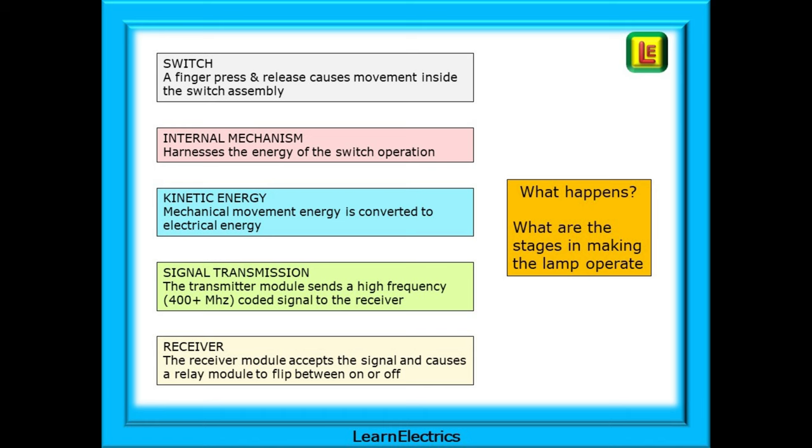A signal is created by this electrical energy and the transmitter module sends this high frequency coded signal through the airwaves to the receiver, which might be on the other side of the room. We cannot hear this signal, it's in the order of 400 megahertz or more. At the receiver switch, the receiver module accepts the signal and causes a relay module to flip between on or off.